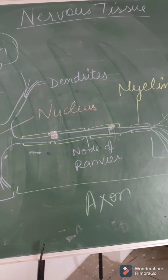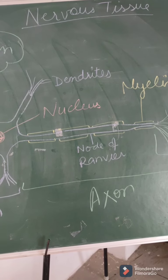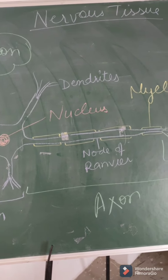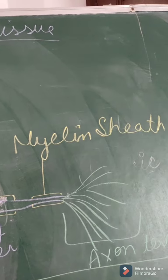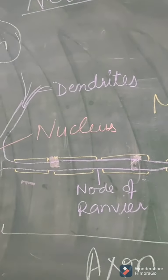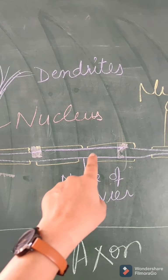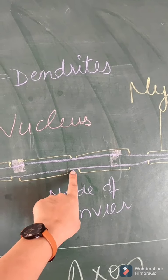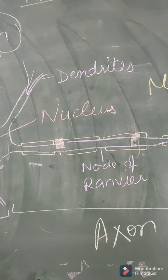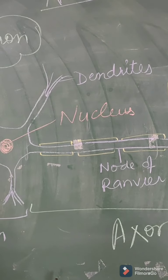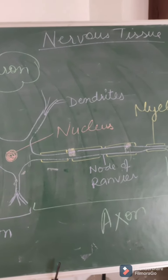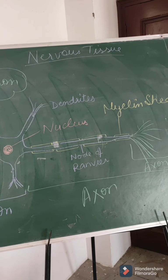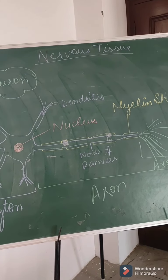On the axon, a covering is present — represented here in yellow — which is known as the myelin sheath. This covering is not continuous; it has breakages in between. Wherever the breakage is present, that portion is known as the node of Ranvier. Nervous tissue is present in the brain, spinal cord, and nerves throughout our body.